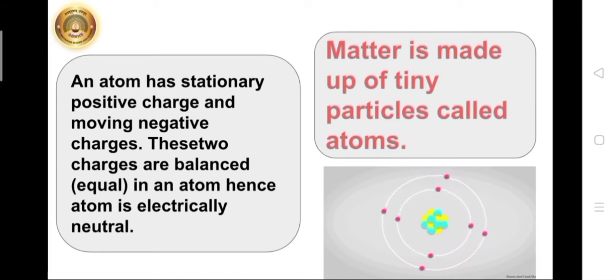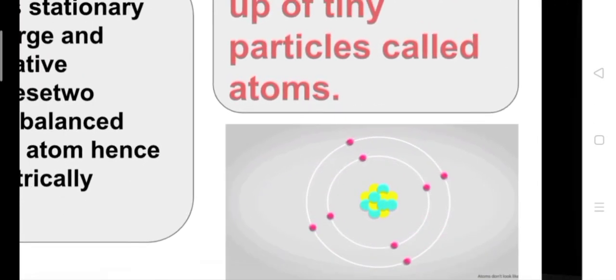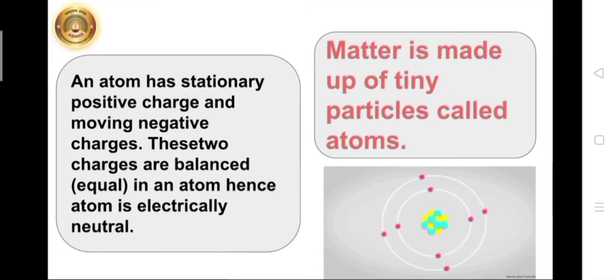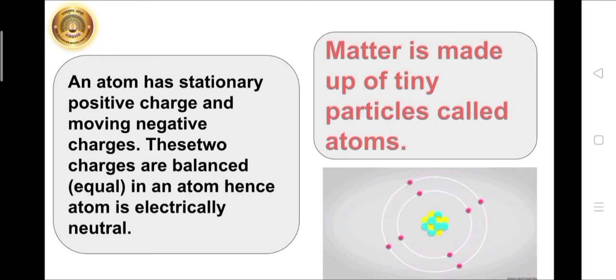Inside an atom there is stationary positive charge and moving negative charges. As you can see here in this picture, you can see pink dots moving in circular orbits. These are representing negative charge. And yellow and green dots at the center represent static or stationary positive charge.